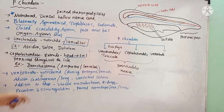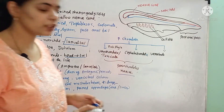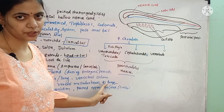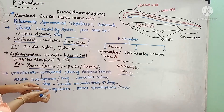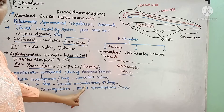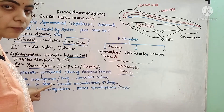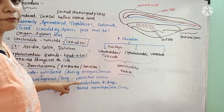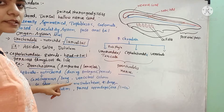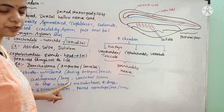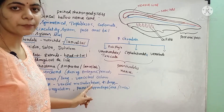These vertebrates also consist of a notochord, which is present during the embryonic stage. Whereas in adult stage, this notochord is modified into a bony or cartilaginous vertebral column. In some cartilaginous fishes, it is made up of cartilage; in remaining animals, it is made up of bone structure. Hence, it may be either cartilaginous or bony in nature.